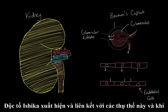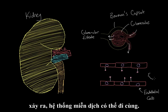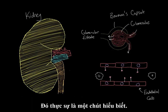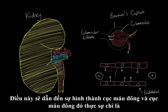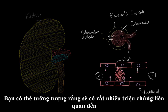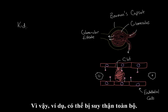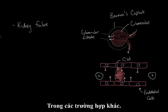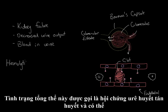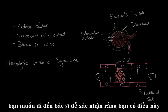The Shiga toxin may come along and bind to these receptors. When this happens, the immune system may notice that these cells are infected with the Shiga toxin. Through a mechanism that is not fully understood, this will lead to the formation of a clot, which will prevent blood flow through this area. As a result, there may be total kidney failure, decreased urine output, and blood in the urine. This overall condition is known as hemolytic uremic syndrome.